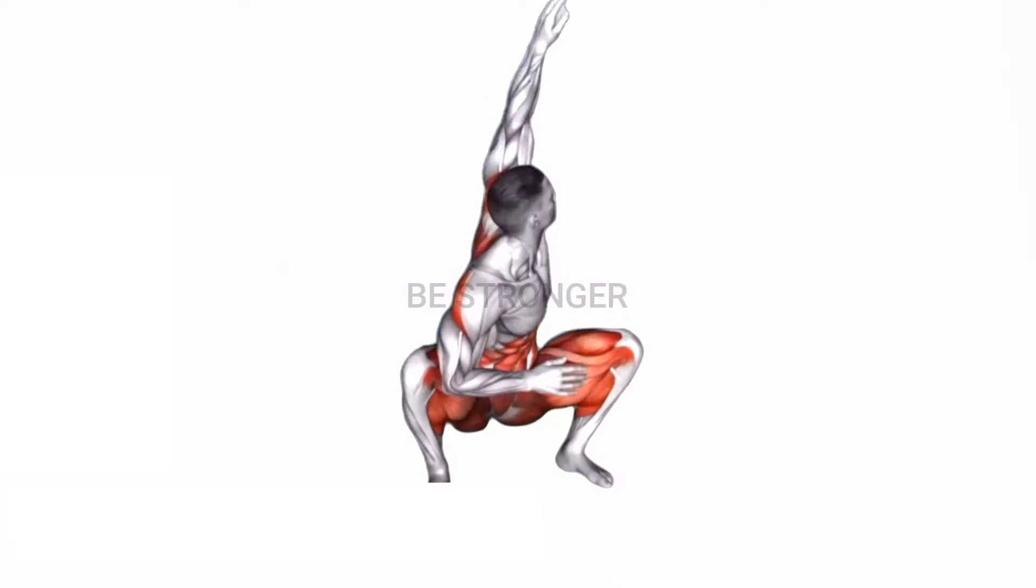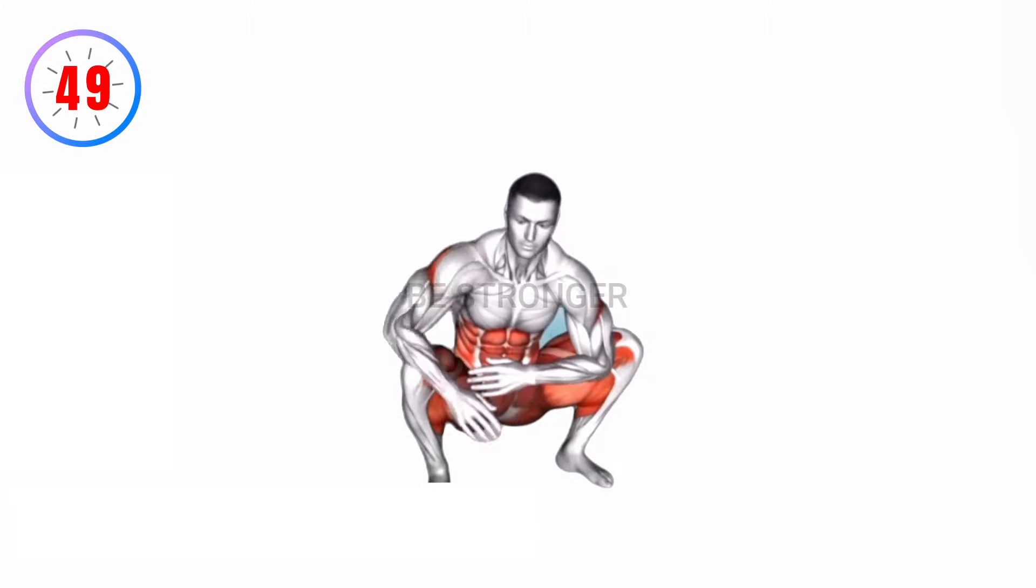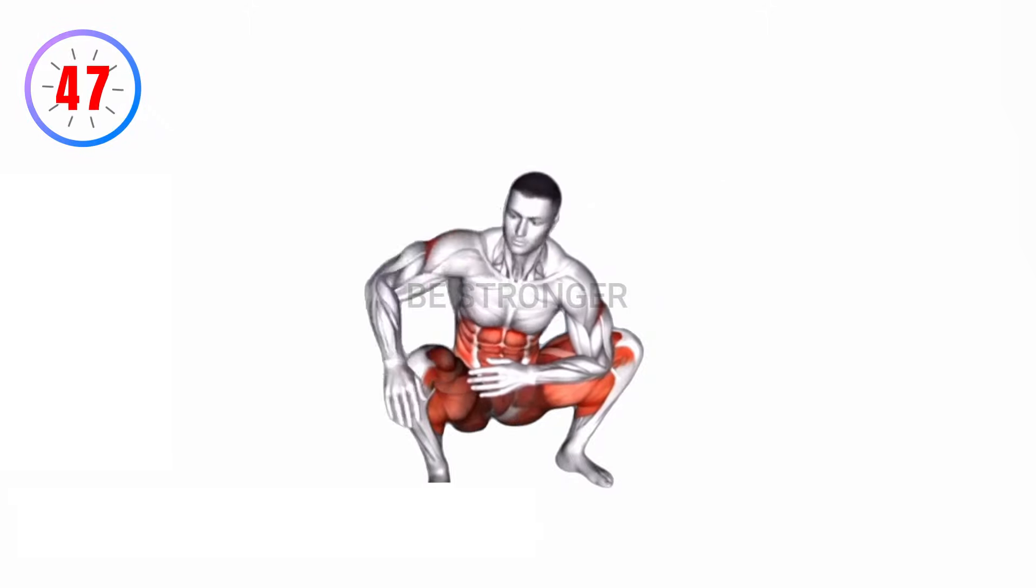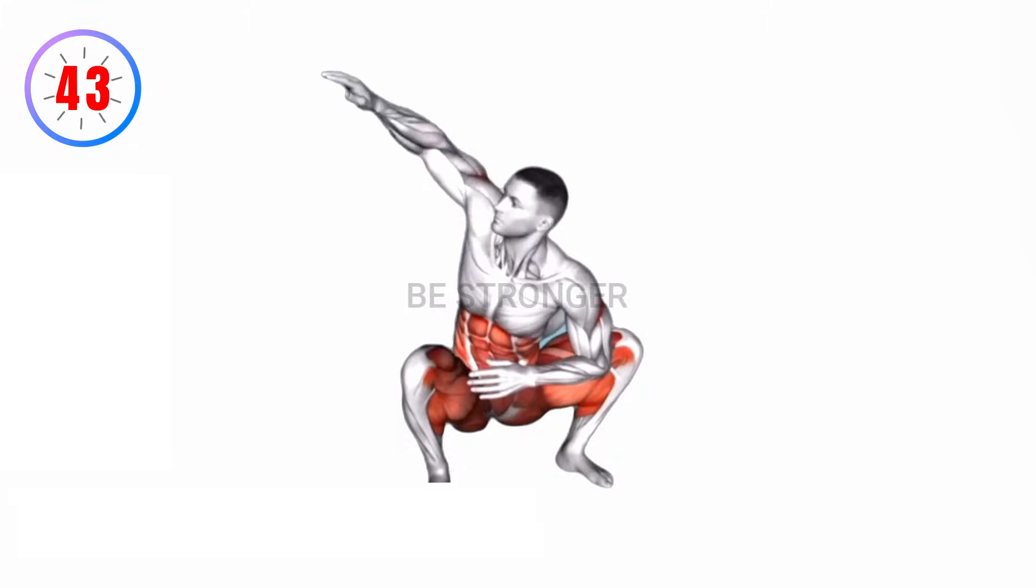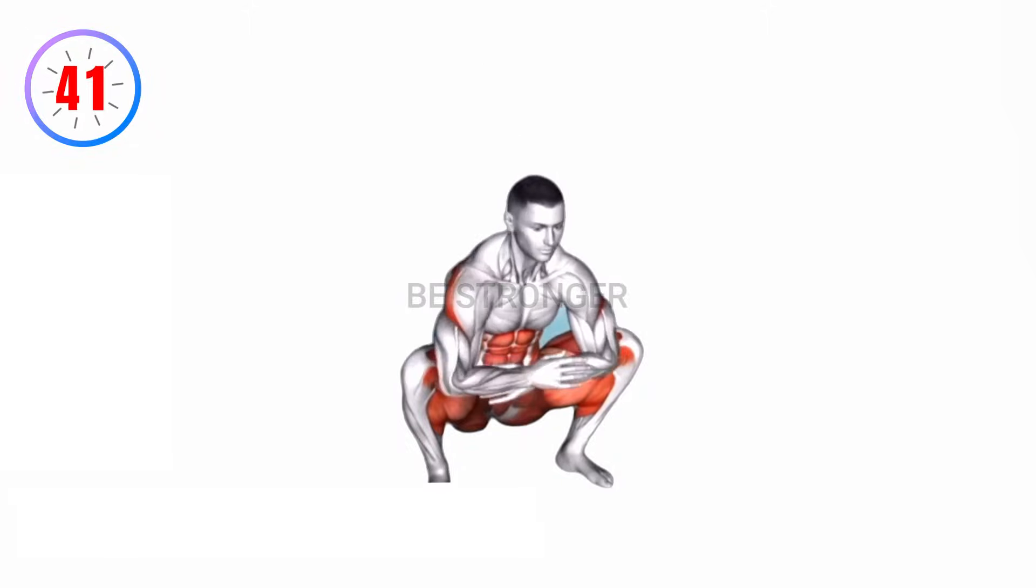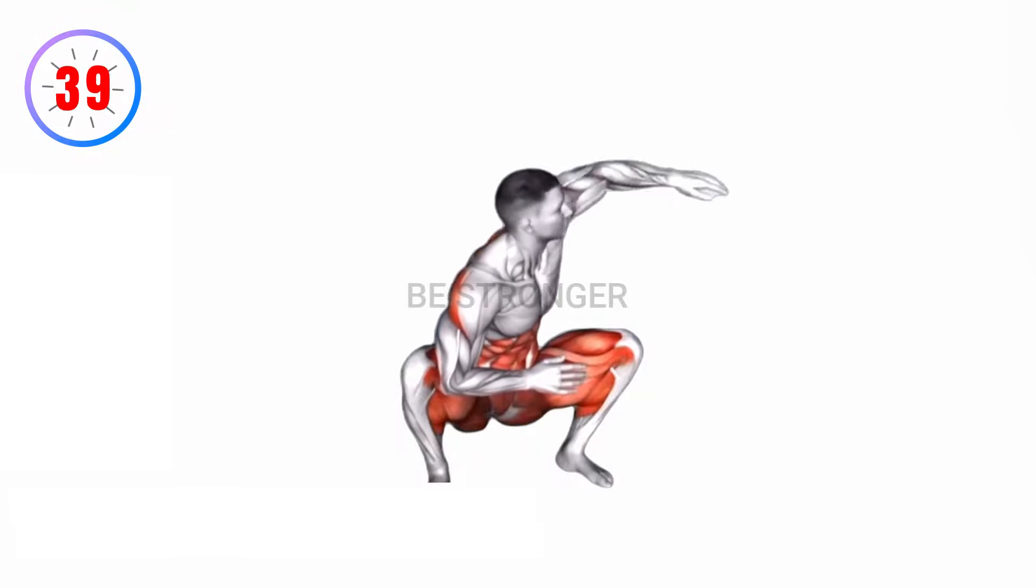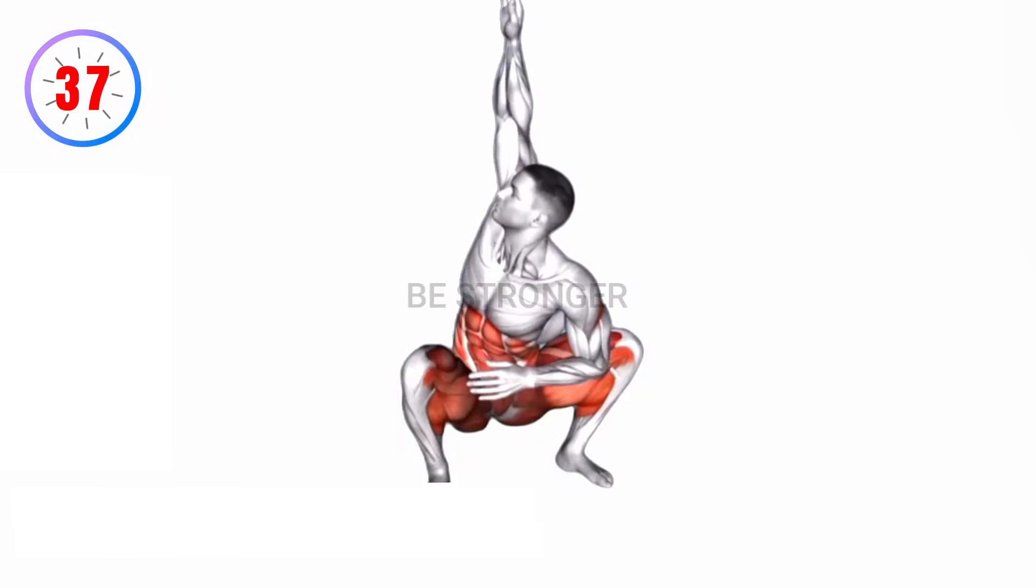Exercise number 6, squat mobility twist. Start in a squat position with your feet shoulder width apart. As you stand up, twist your torso to one side, engaging your obliques and lower belly. Return to the squat position and twist to the other side.